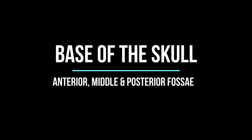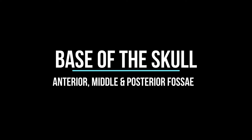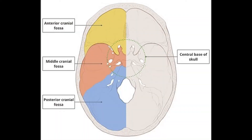Hey guys, it's Layla. Today we'll speak about the base of the skull. In general, the skull has three fossae: the anterior cranial fossa, the middle, and the posterior cranial fossa. The skull holds the brain — the frontal lobe goes into the anterior cranial fossa, the temporal lobes go into the middle, and the occipital lobes go into the posterior.